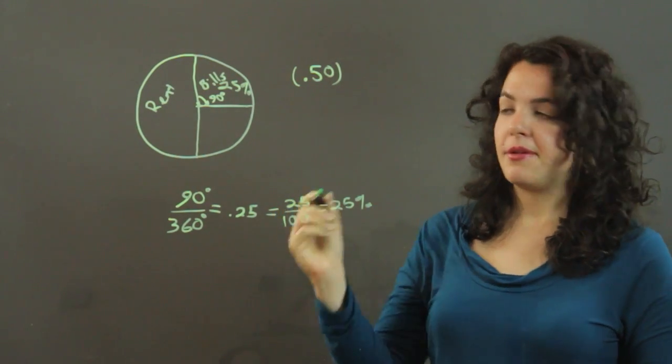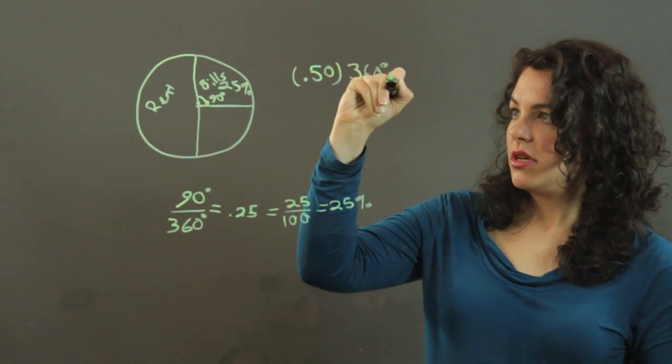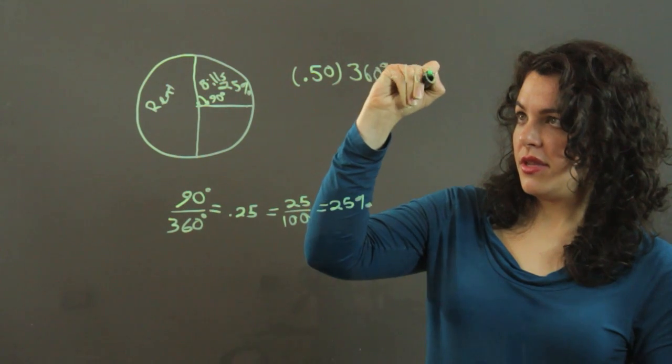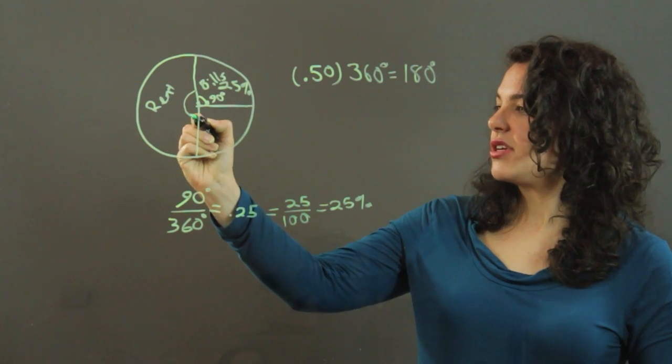multiply it by the entire internal angle, which is 360 degrees, and you will find that your rent needs to be drawn so that we have a 180-degree angle.